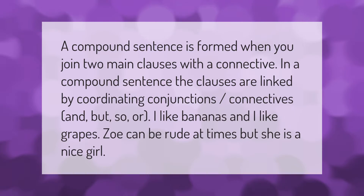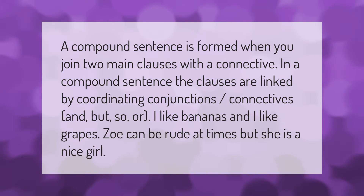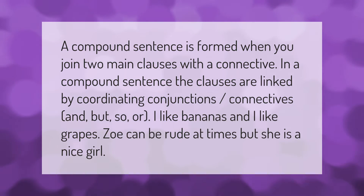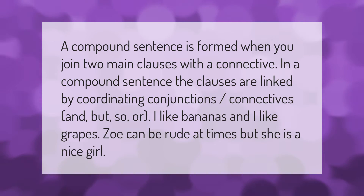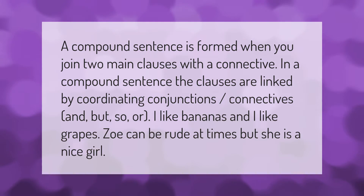A compound sentence is formed when you join two main clauses with a connective. In a compound sentence, the clauses are linked by coordinating conjunctions (connectives): and, but, so, or. For example: 'I like bananas and I like grapes.' Another example: 'Zoe can be rude at times, but she is a nice girl.'